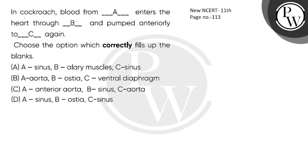Hello children, let's see this question. In cockroach, blood from A enters the heart through B and is pumped anteriorly to C. Choose the option which correctly fills in the blanks. Here we talk about the blood vascular system in cockroach — how is it? It is open type.